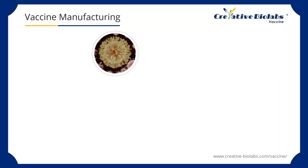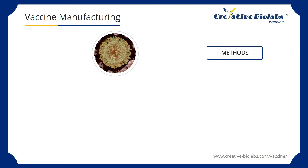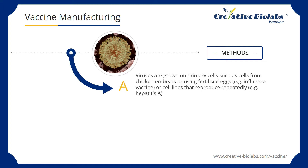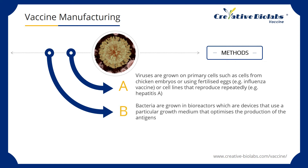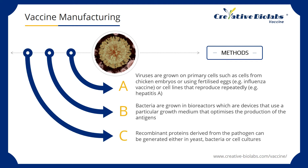In the production of vaccines, manufacturers usually choose different ways of pathogen proliferation according to different vaccines, to obtain pathogenic proteins or DNA. Viruses are grown on primary cells such as cells from chicken embryos, or using fertilized eggs, or cell lines that reproduce repeatedly. Bacteria are grown in bioreactors, which are devices that use a particular growth medium that optimizes the production of the antigens. Recombinant proteins derived from the pathogen can be generated either in yeast, bacteria, or cell cultures.